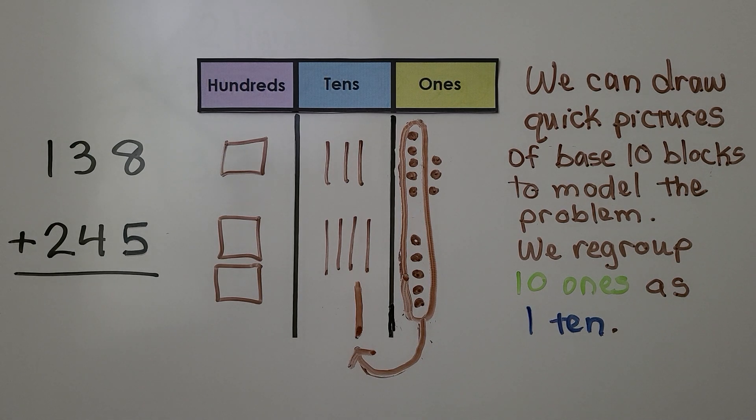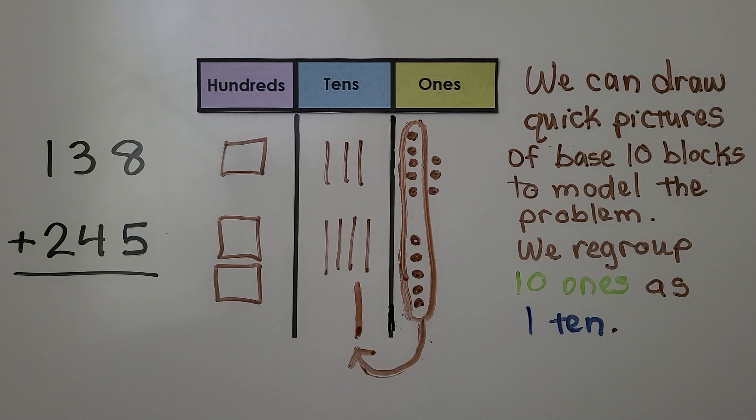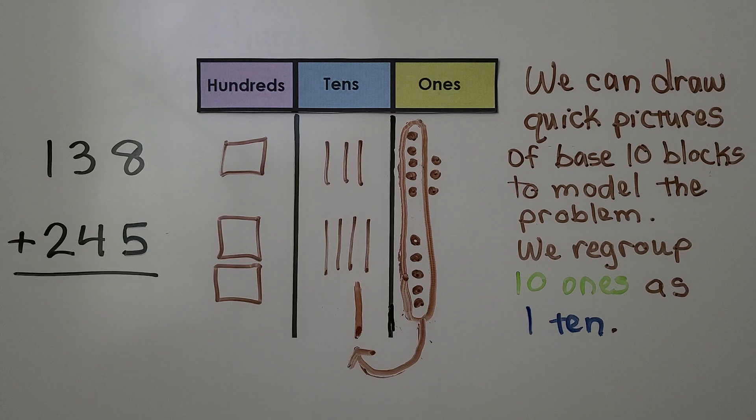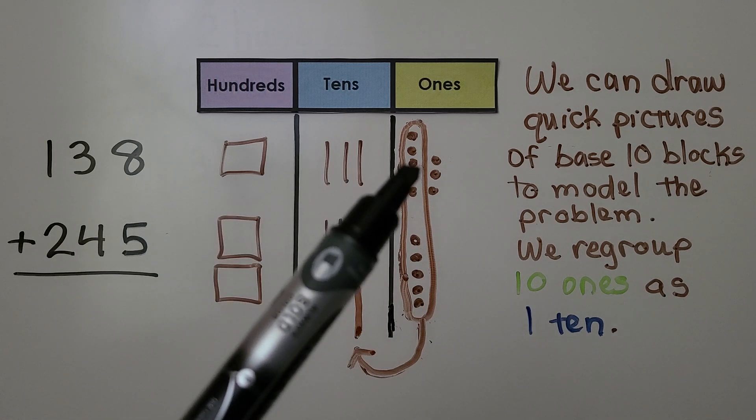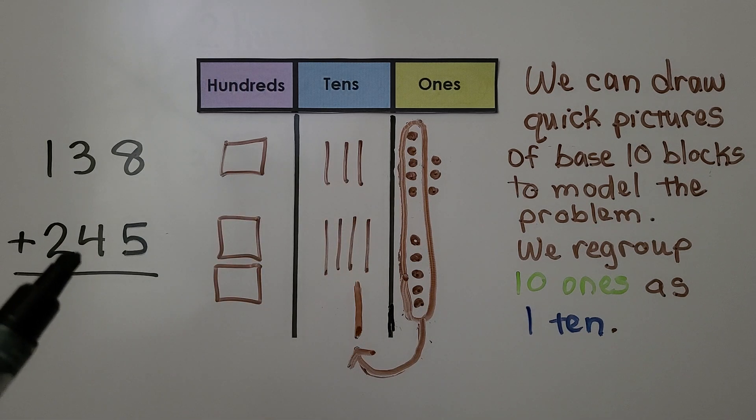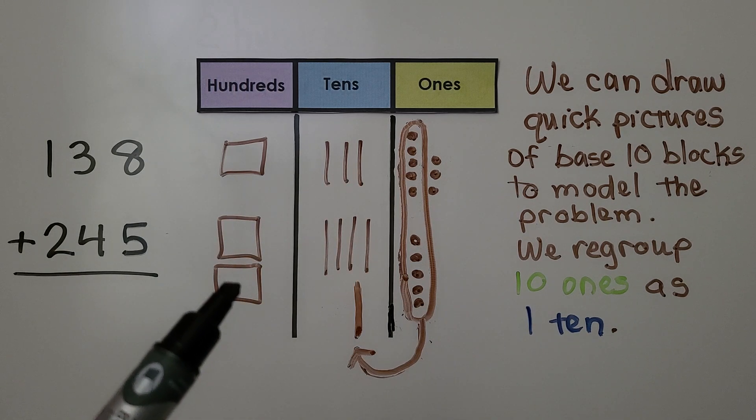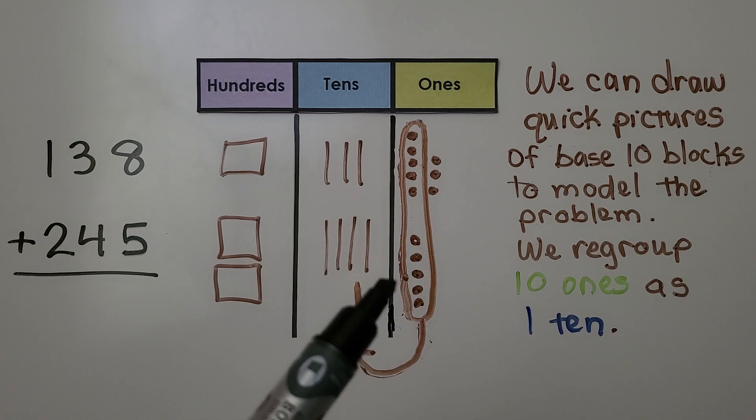We can draw quick pictures of base ten blocks to model the problem. We regroup ten ones as one ten. So we have 138. That's 100, three tens, eight ones. We have 245. That's two hundreds, four tens, five ones.